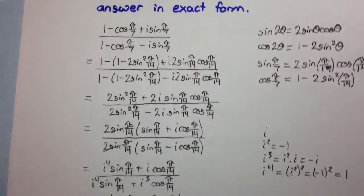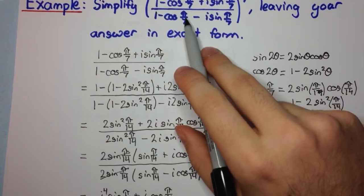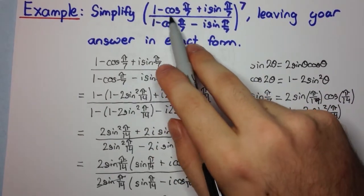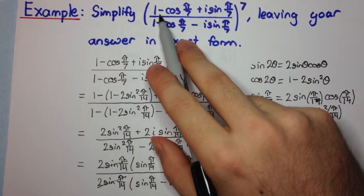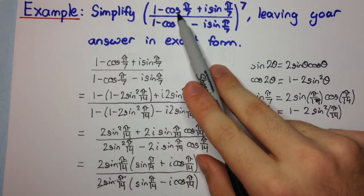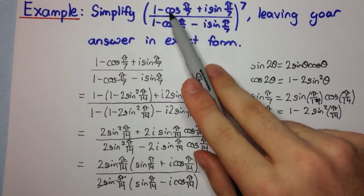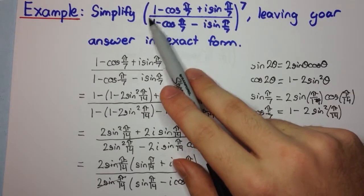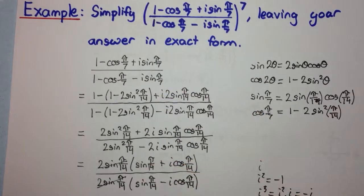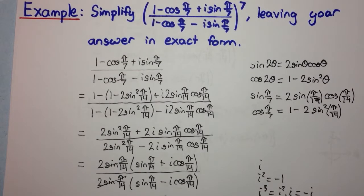The key trick was recognising that De Moivre's theorem couldn't be applied directly. We needed to use the double angle formula cos(2θ) = 1 − 2sin²(θ) to eliminate the leading 1, simplify into mod-arg form, then apply the theorem. I hope you enjoyed the video — be sure to subscribe. Thank you.